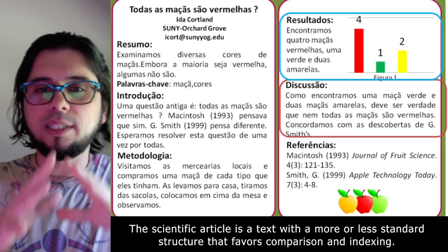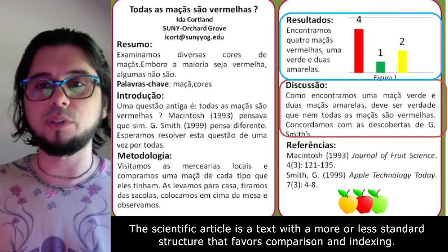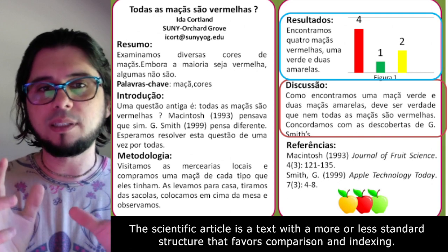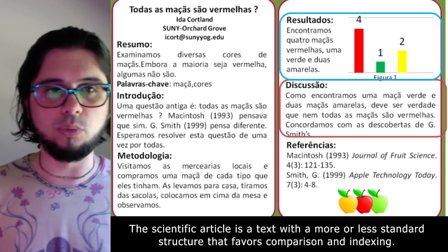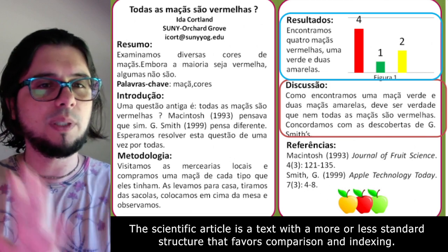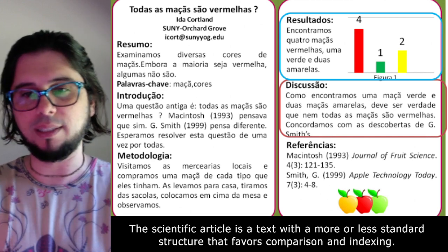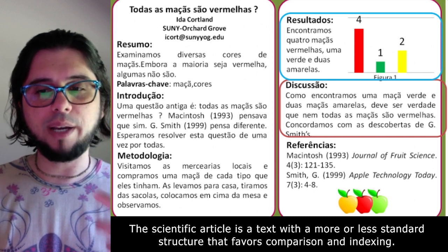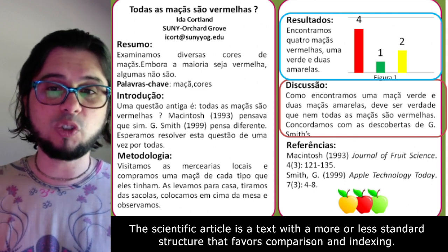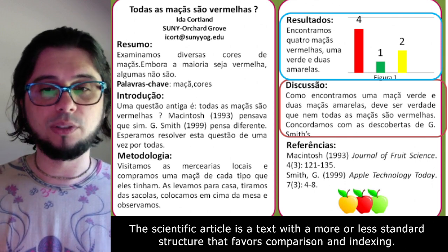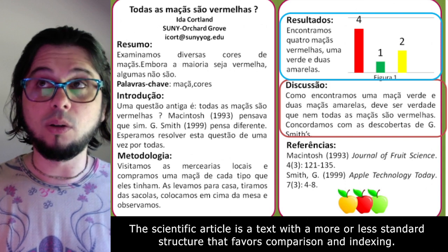Most scientific articles have an abstract, introduction, methodology, results section, discussion, and reference list. This helps with comparing different articles and indexing in search engines like Google Scholar, which is trained to find references in reference lists. This allows for better collective knowledge accumulation, which is the goal of any science. This structure is also shaped by the scientific method: observing the world, questioning it, generating a hypothesis, predicting results of an experiment, running it, seeing results, possibly rejecting the hypothesis, and formulating another — until a theory emerges that can be extended with further evidence.